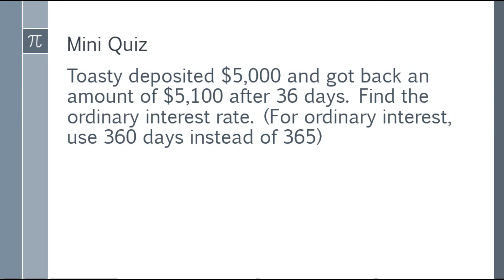Let's have a mini-quiz. Toasty deposited $5,000 and got back an amount of $5,100 after 36 days. Find the ordinary interest rate. For ordinary interest rate, use 360 days instead of 365. For 365, it's for exact. For ordinary, you have to use 360 days.